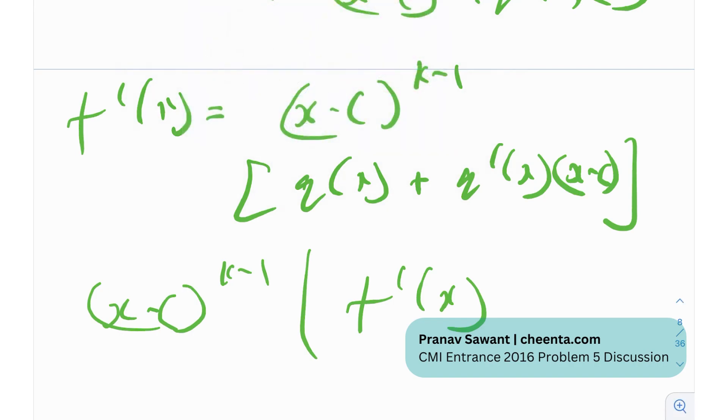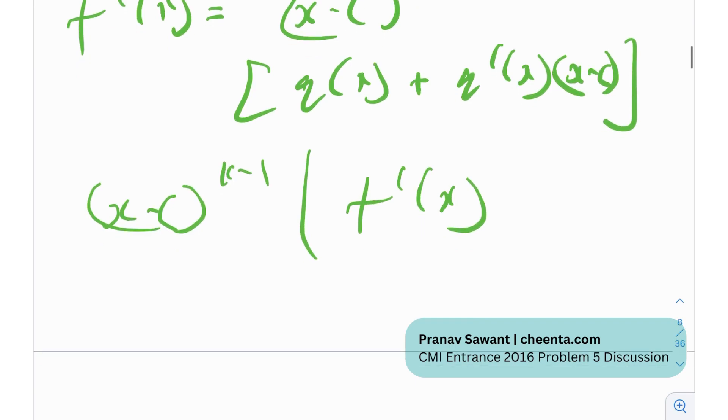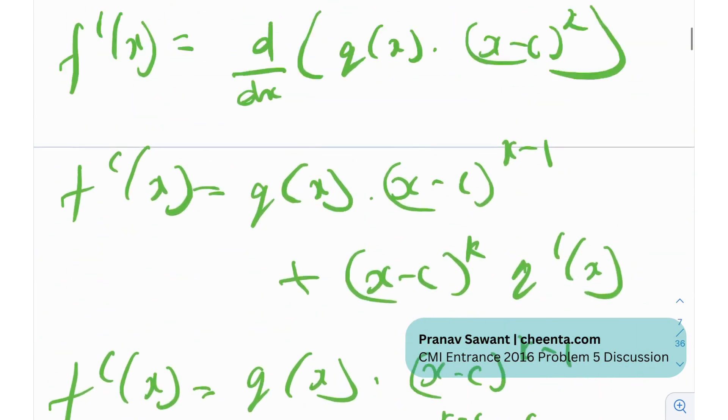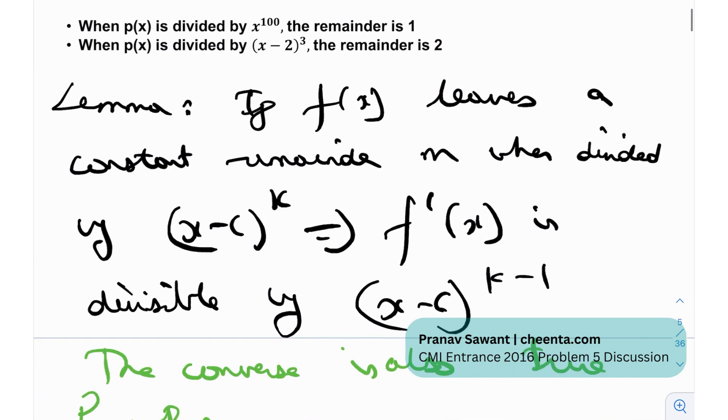Now the converse is also true because of the fact that you know in a way integration and differentiation are inverses of each other so if you actually integrate f prime of x you would get (x minus c) raised to the power k plus some constant m that we were referring to earlier so you can actually prove that the converse is also true.